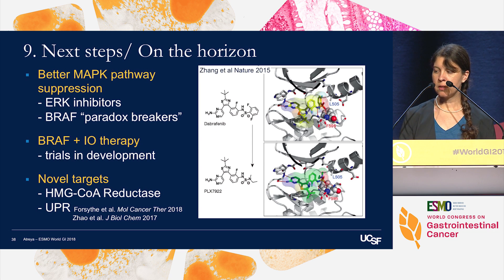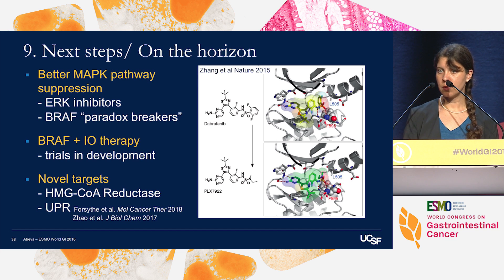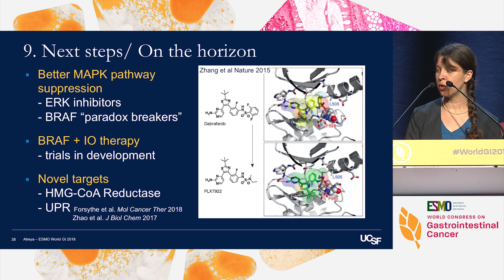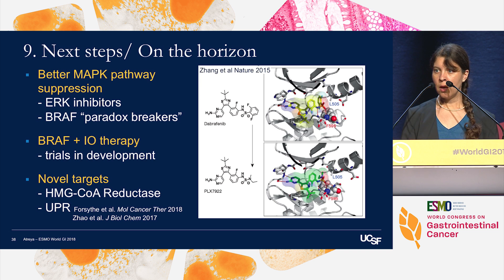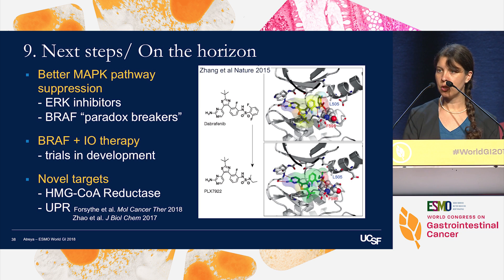As next steps, there is interest in optimizing suppression of the MAP kinase pathway, including with ERK inhibitors. There is also a new class of BRAF inhibitors in development called paradox breakers. On the horizon are BRAF and immunotherapy combinations with several clinical trials in development, as well as strategies to find novel agents including recent publications on HMG-CoA reductase and the unfolded protein response.